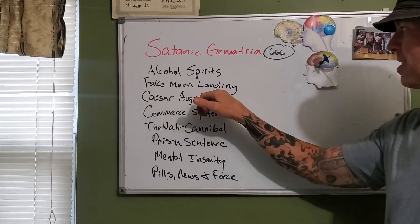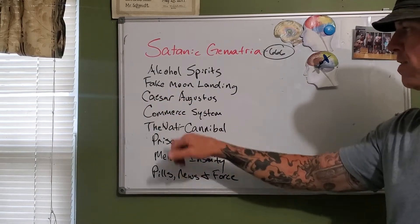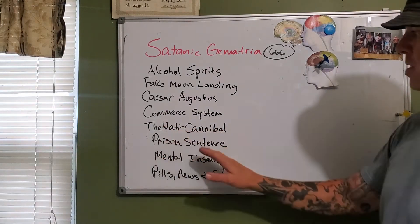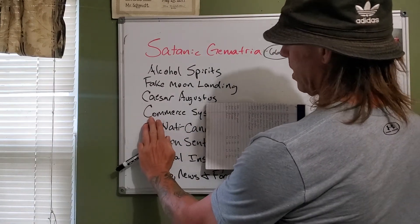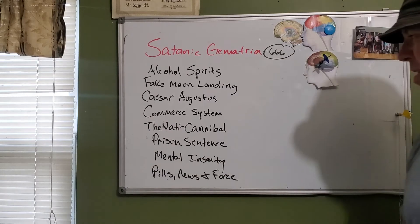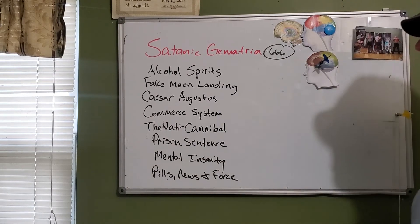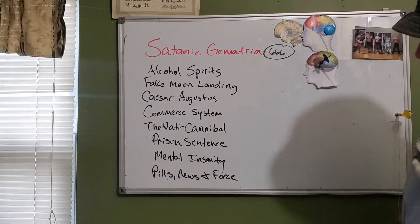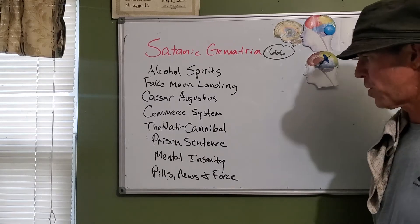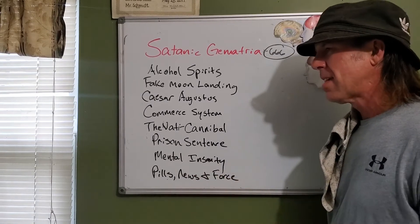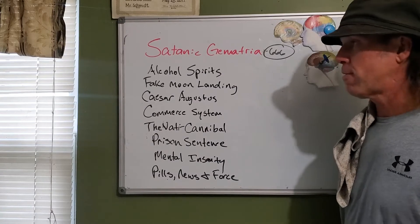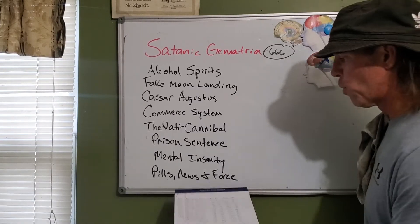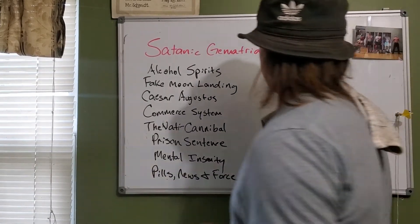You are in a commerce system — this is a corporation. Prisons are for the product of commerce; whenever we get out of hand and don't follow the company's rules we get locked up. Mental insanity. Funny how right at the end of mental illness awareness month you get that in Texas — and then pills, news, and force: all 666, every one of them.